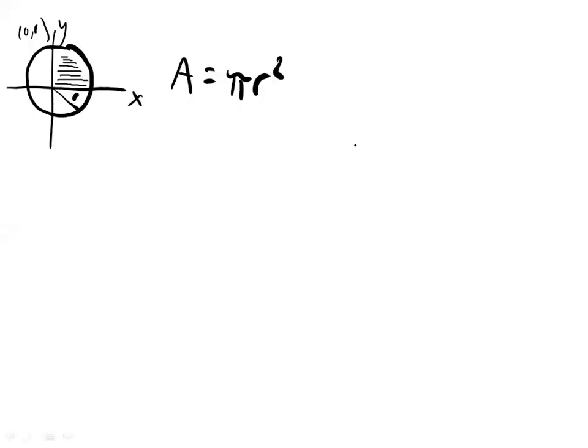Okay, so you know the area of a circle is pi r squared. How can you use calculus to prove this?